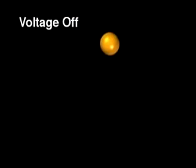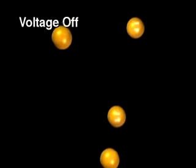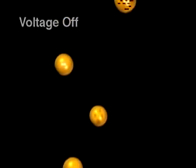When there is no voltage applied, the fall of the droplets is determined by their mass and the viscosity of air through which they fall.